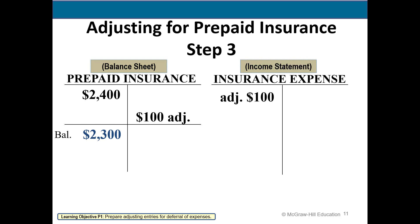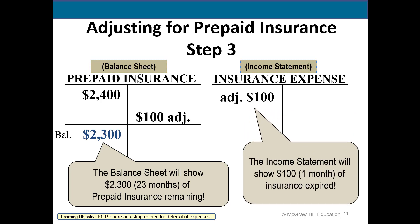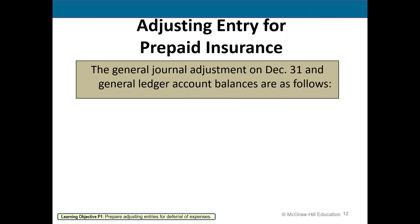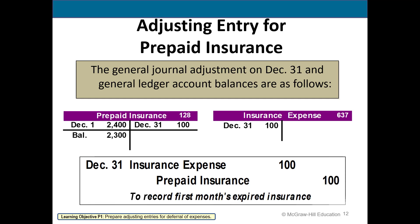The balance sheet will show prepaid insurance as $2,300 and the income statement will show $100 as an expense. The adjusting entry is: debit insurance expense and credit prepaid insurance.